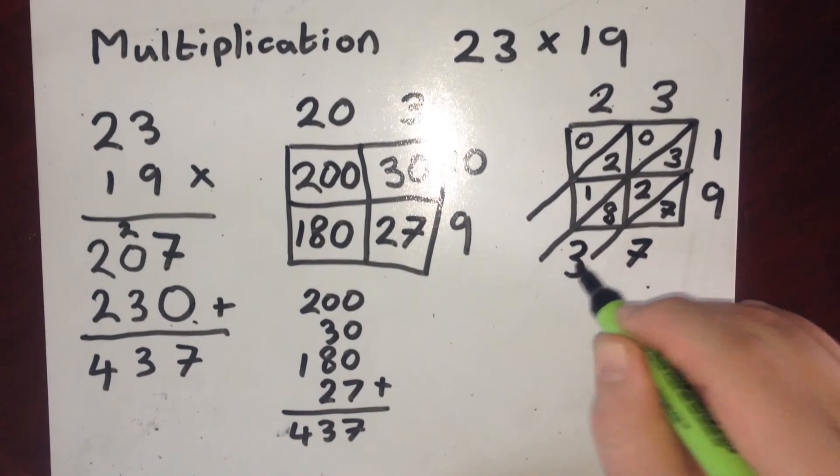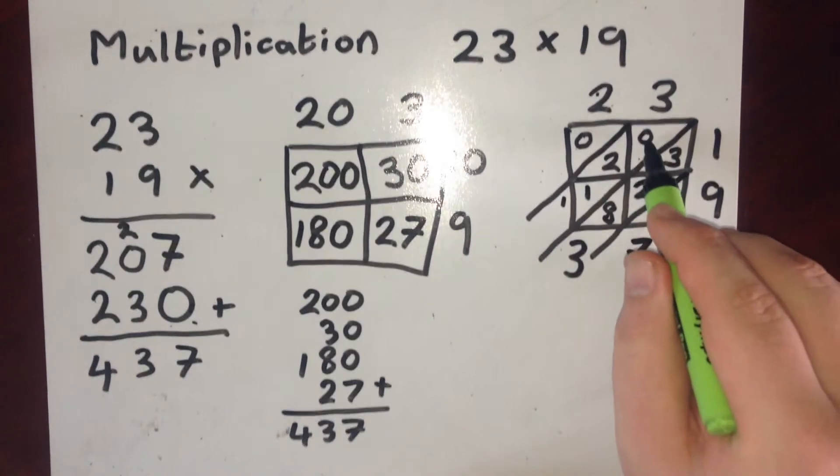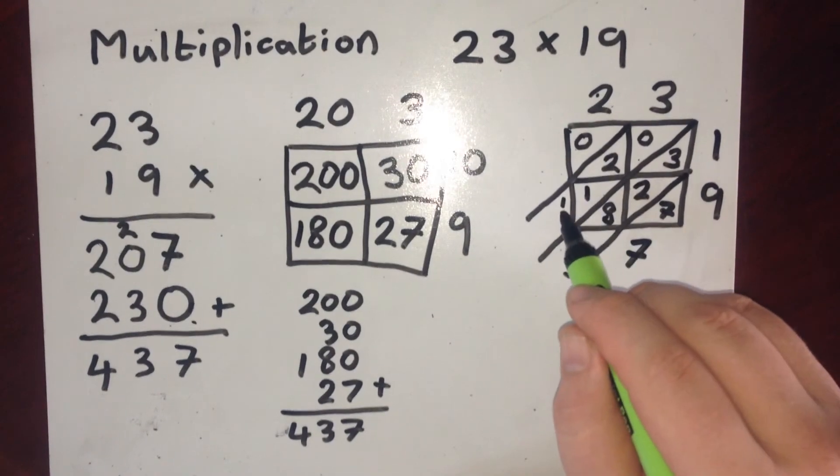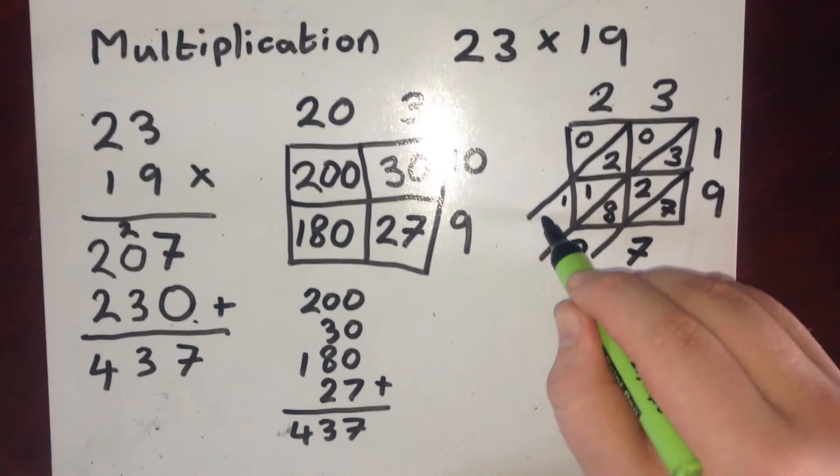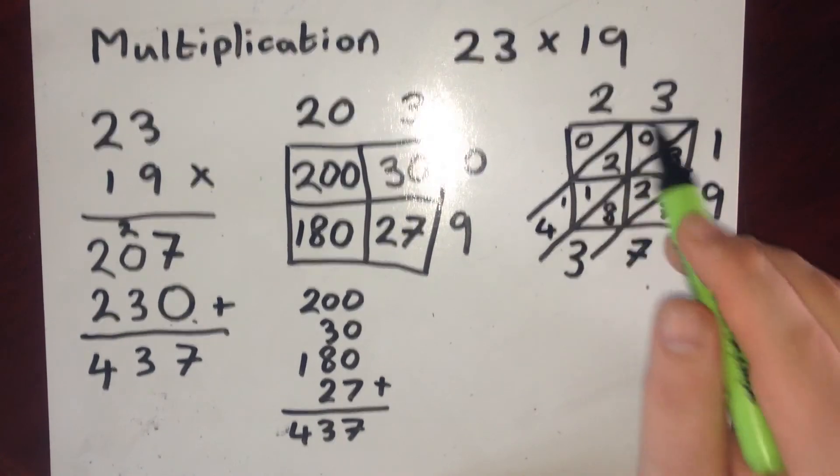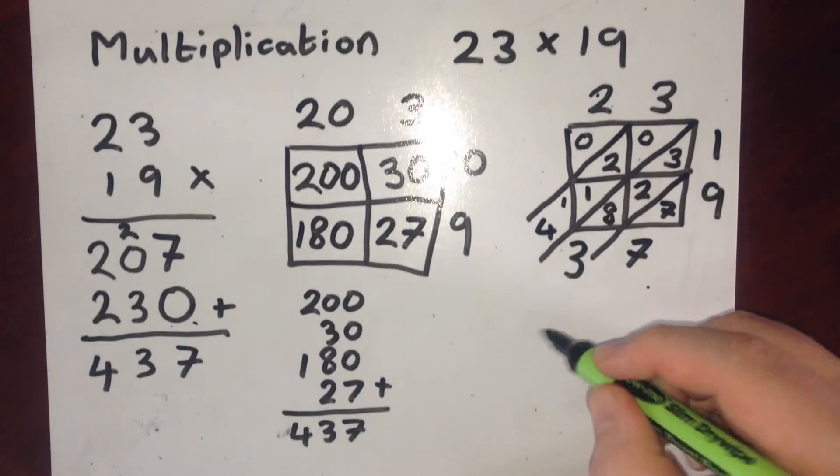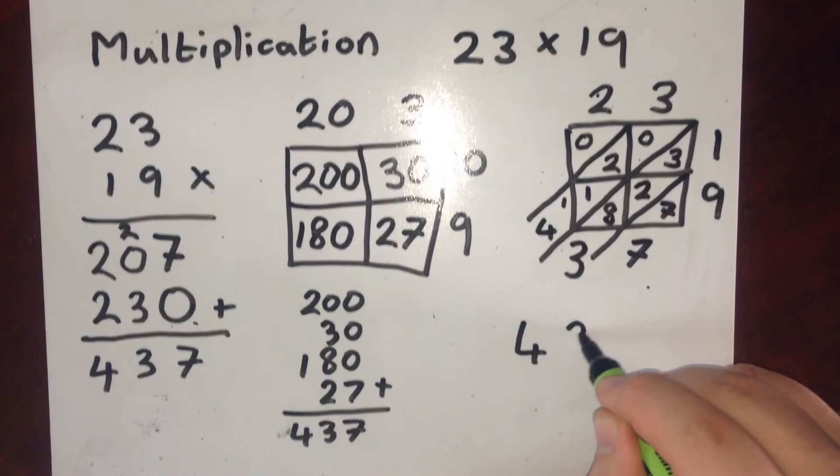So I write 3 down, I carry 1 into the next diagonal. So then I do 0 plus 2 plus 1 plus 1 is 4. I've only got a 0 in this diagonal so I don't need to add anything up there. So now I've added these up, I've got 4, 3, 7. So that's 437.